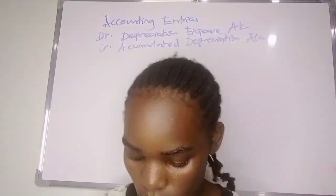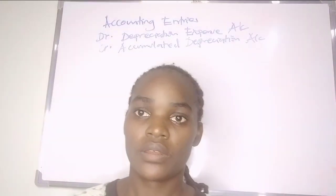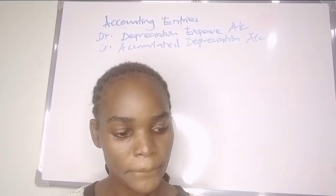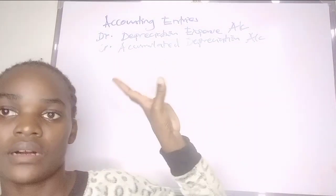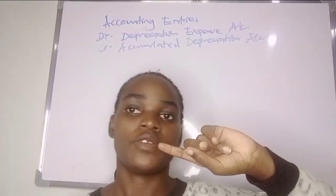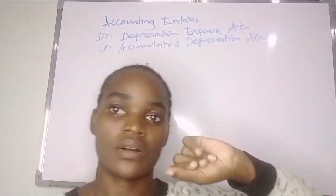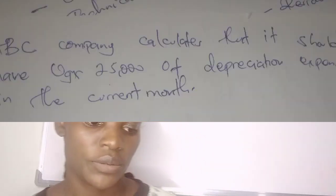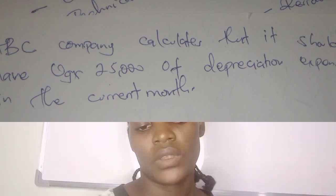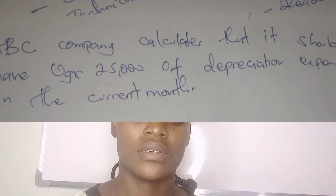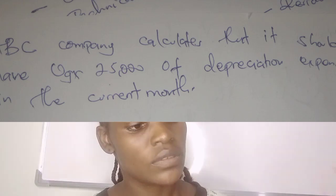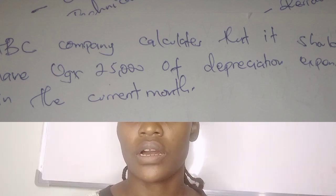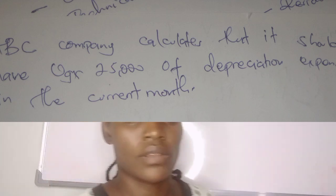Welcome to my channel. We are still handling depreciation. In this video we are going to have an example. The accounting entry for depreciation: we debit the depreciation expense account and we credit the accumulated depreciation account. The question says MBC Company calculates that it should have $25,000 of depreciation expense in the current year.